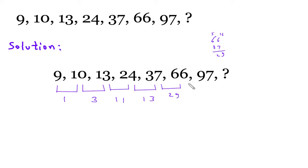Difference between 97 and 66: so 97 minus 66 will be 31. Now we have to find this difference, this will be 31.